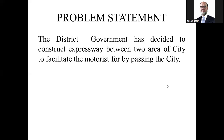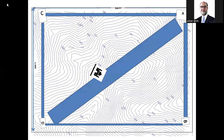The problem is stated as follows: the district government has decided to construct an expressway between two areas of the city to facilitate motorists bypassing the city. This is the topography of that city in which planners identified four zones — C to A, B, C, and A to B. Using your knowledge of transportation planning, you have to decide which alignment is desired or should be prioritized for this assignment.